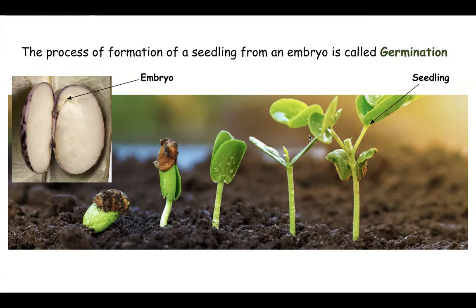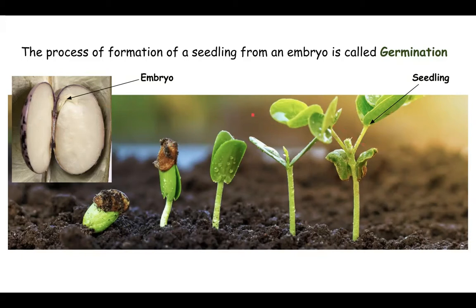First of all, what exactly is germination? Germination is the process of formation of a seedling from an embryo. An embryo is present inside a seed. The embryo has the radicle and the plumule. The embryo will later on form the seedling once it gets the suitable conditions for germination.